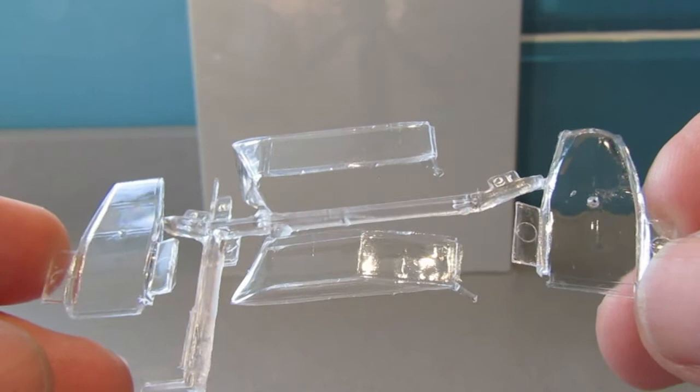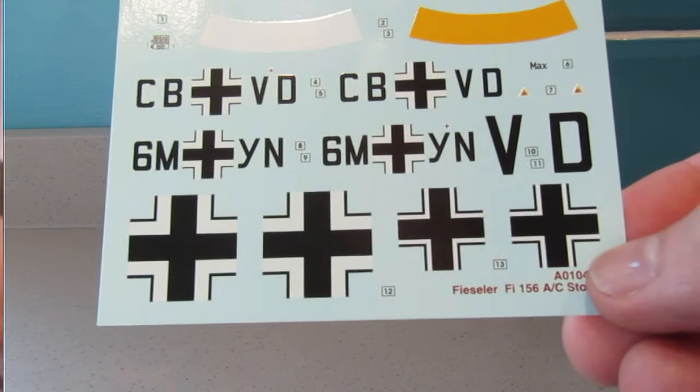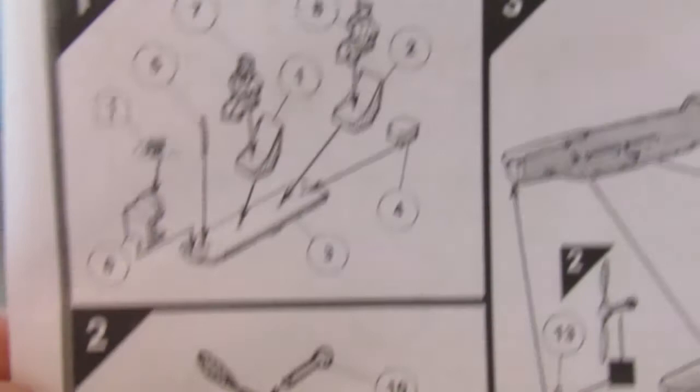This is what's put me off doing the Airfix Storch in the past - very little or no framework on the canopy, so a lot of reference work to get something to put on that to get the framework. Decals look nice.